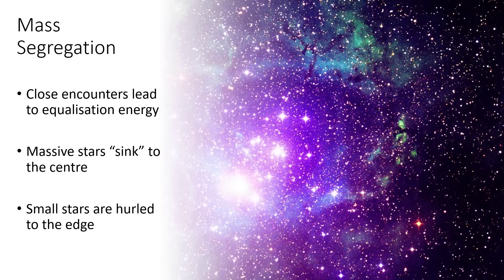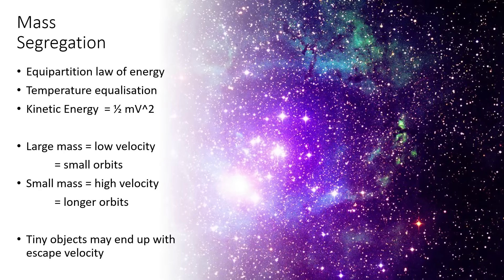The small stars are hurled out towards the edge. You can see that in this picture of this cluster, where all the big bright stars are in the middle and all the faint ones are emanating around to the outside there.